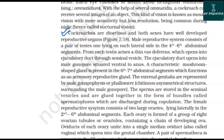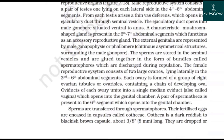Cockroaches are dioecious and both sexes have well-developed reproductive organs. The male reproductive system consists of a pair of testes, one lying on each lateral side in the 4th to 6th abdominal segments. From each testis arises a thin vas deferens, which opens into the ejaculatory duct through the seminal vesicle. The ejaculatory duct opens into the male gonopore situated ventral to the anus. A characteristic mushroom-shaped gland is present in the 6th to 7th abdominal segments, functioning as an accessory reproductive gland. The external genitalia are represented by male gonapophysis or phallomeres — chitinous asymmetrical structures surrounding the male gonopore. Sperms are stored in the seminal vesicles and are glued together in bundles called spermatophores, discharged during copulation.